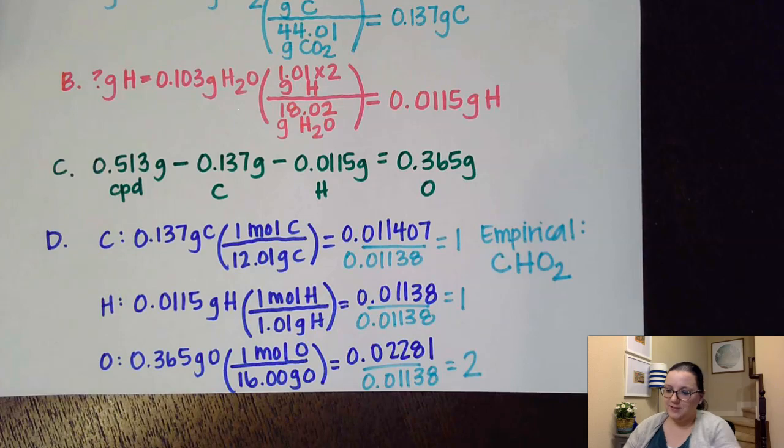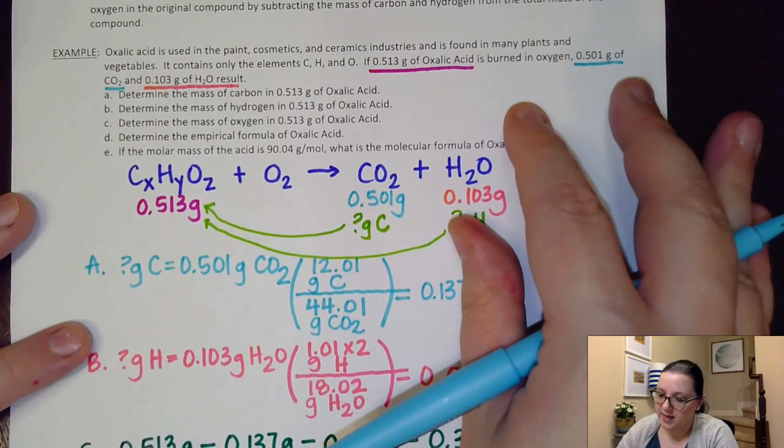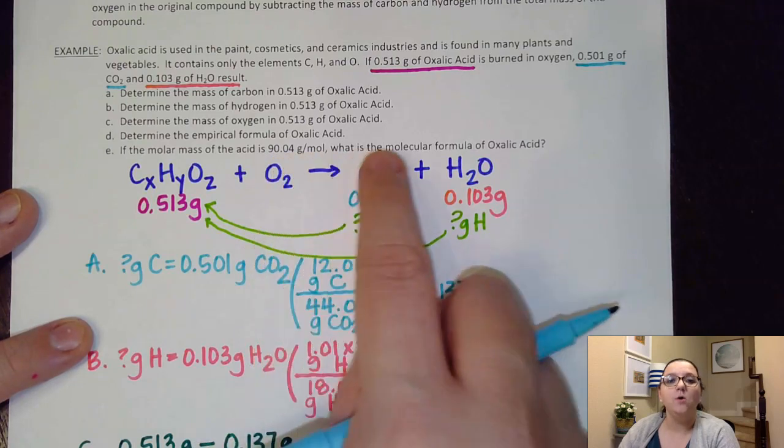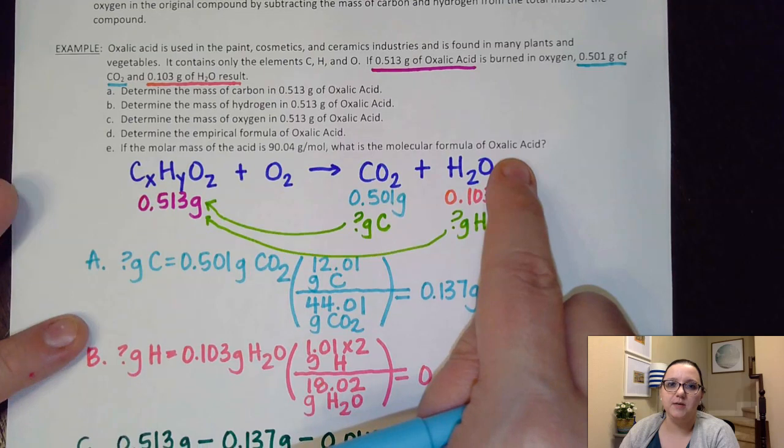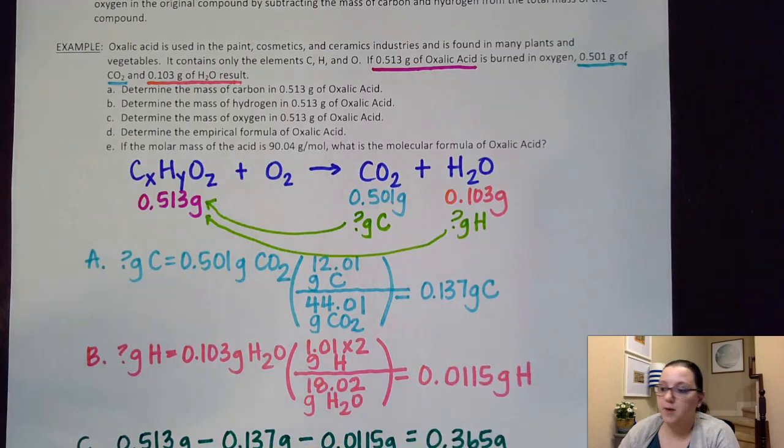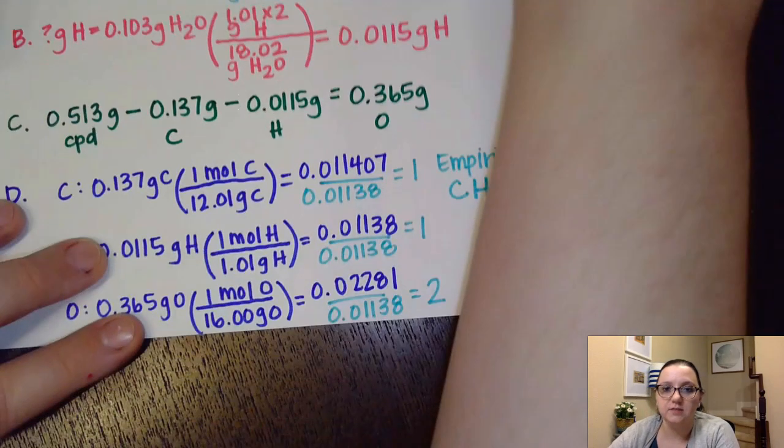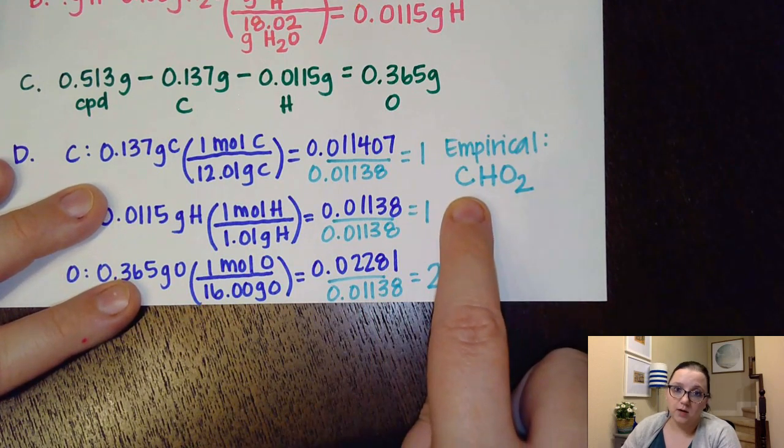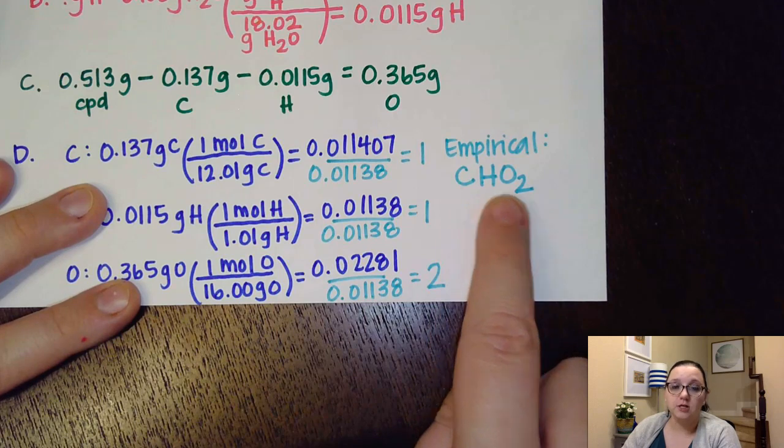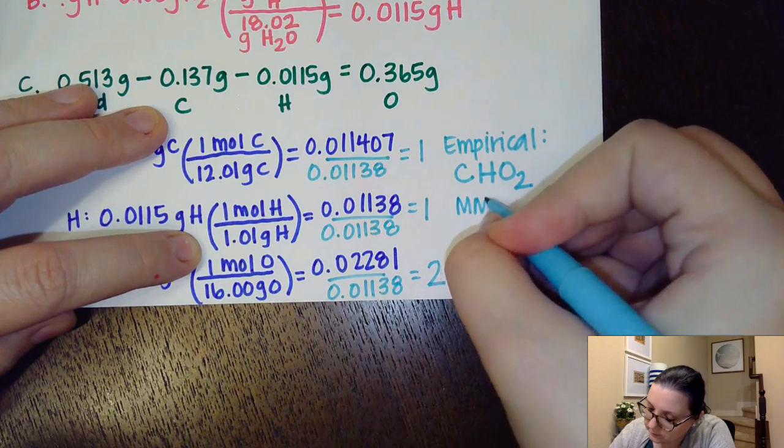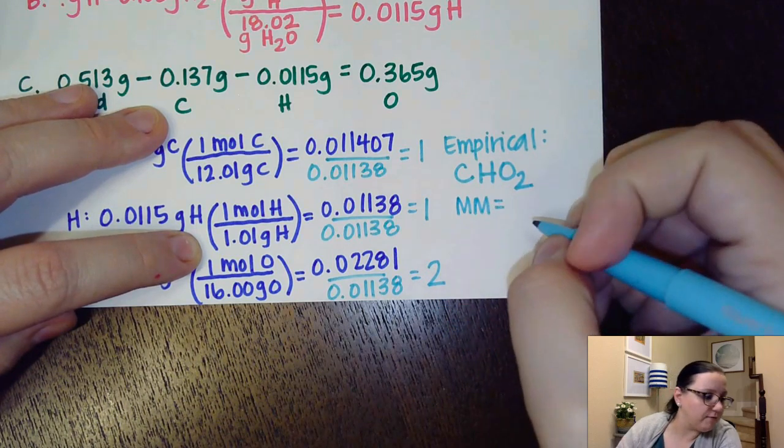All right. Last but not least here. It says, if the molar mass of the acid is 90.04 grams per mole, what is the molecular formula for oxalic acid? Meaning they're asking us, what is the actual formula of this compound? So this is again, where I want to compare my molar masses. So I would first need to figure out what the molar mass of this guy here is. So I would add up the 12.01 of carbon, 1.01 of hydrogen, and two times 16 of oxygen. That gets a molar mass of 45.02 grams per mole.